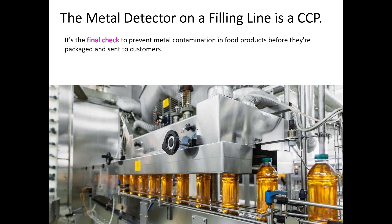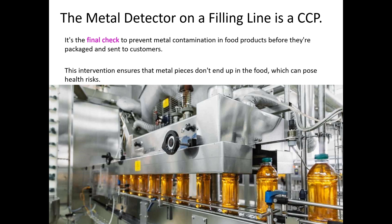That is why metal detector steps would typically be a CCP in a filling line process — it's the final check where you can prevent metal contamination in your product. Because once it goes past the filling line and into the warehouse, there is a high likelihood that there will be no metal detector after the warehouse. Now, if there is a metal detector in the warehouse checking it there, that would also be a CCP, because that's the last time you're going to check for metal in your product. And that is why it is a food safety CCP.